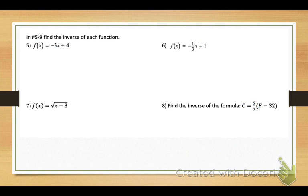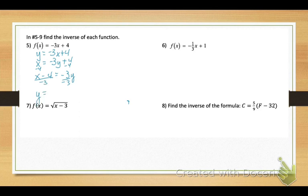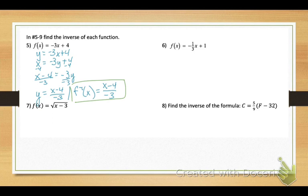Now find the inverse of each function. Remember f of x equals y. Start by interchanging variables, so x equals negative 3y plus 4. Solve for y: subtract 4, then divide by negative 3. We get y equals x minus 4 over negative 3. Replace y with inverse function notation. This is the equation that will undo our original — it's the inverse.